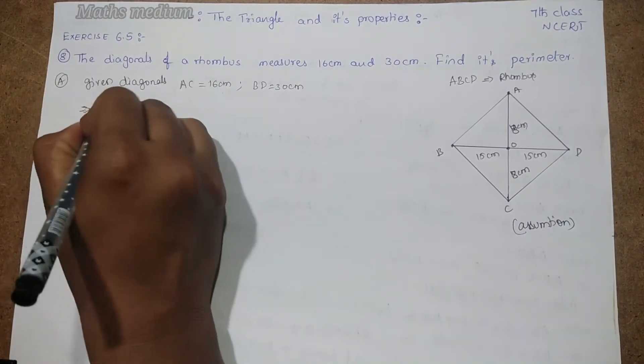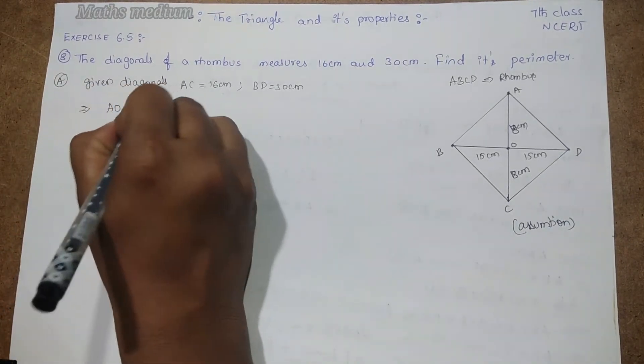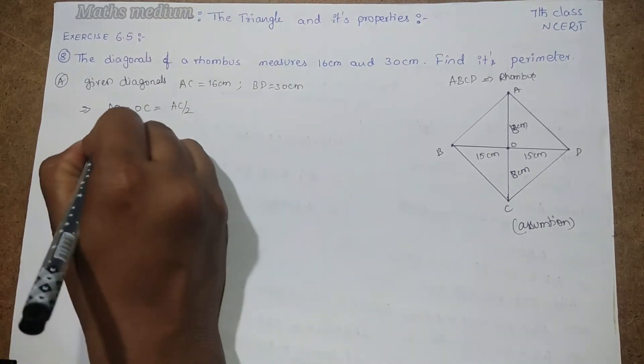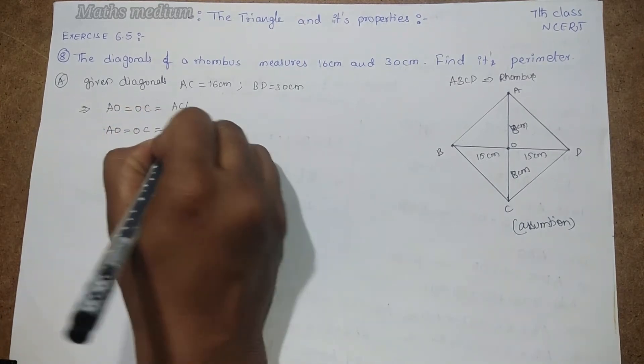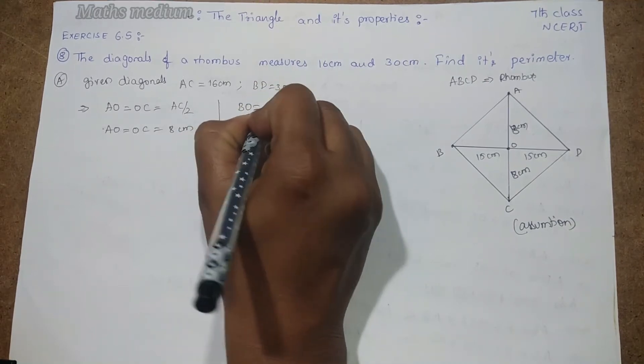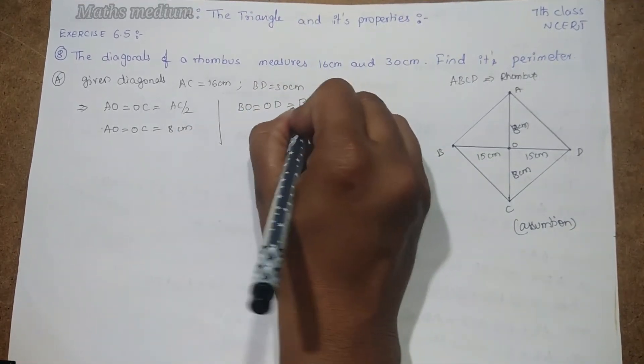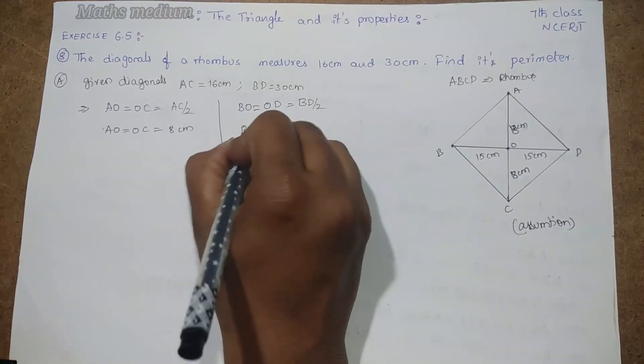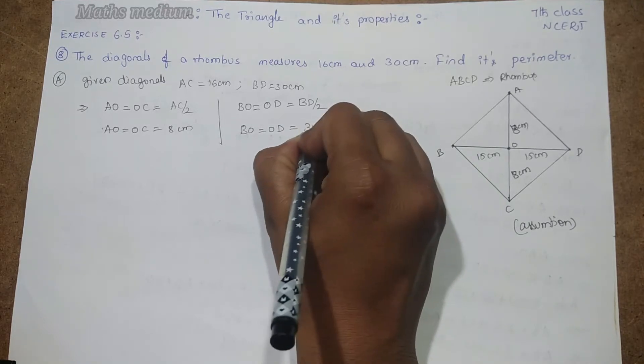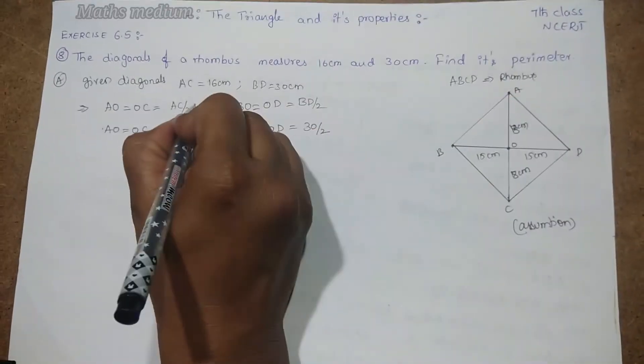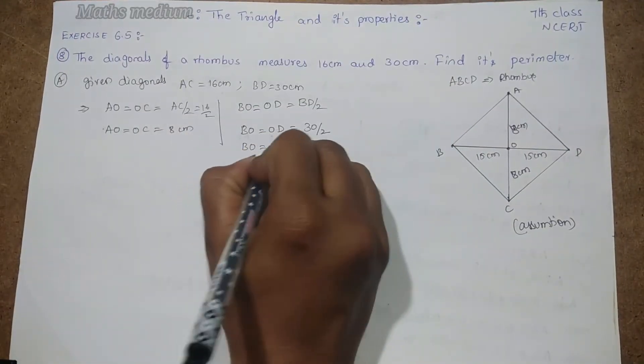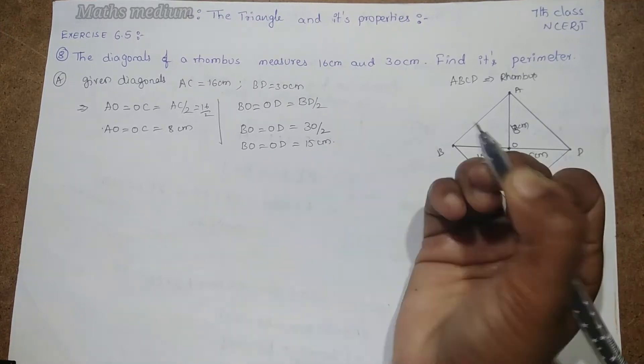AO is equal to OC is equal to AC by 2, that is AO equals OC equals 8 cm. Similarly, BO equals OD equals BD by 2. So BO equals OD equals 15 cm.